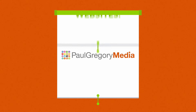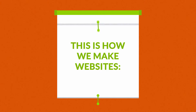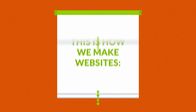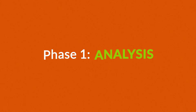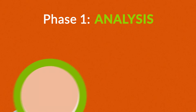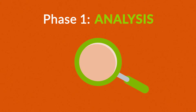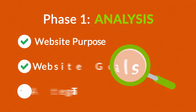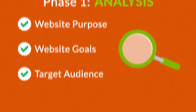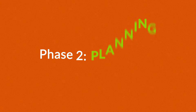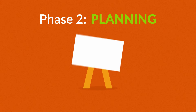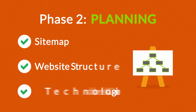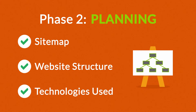This is how we make websites, by following this seven-phase web design process. Phase 1: Analysis. The first step is always about information gathering, identifying things like the website purpose, goals, and target audience. Phase 2: Planning. A plan includes a definition of the sitemap, structure, and technologies that we're about to use.